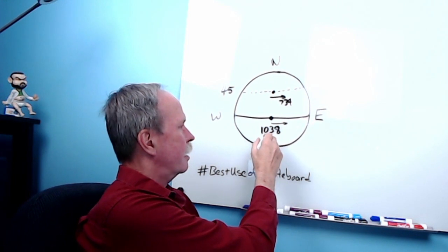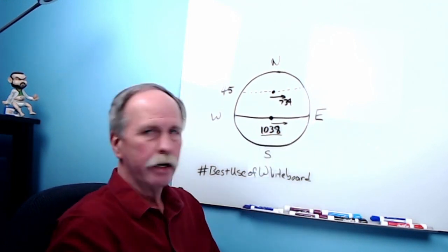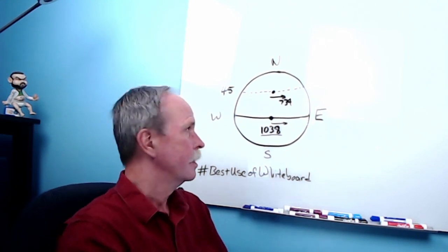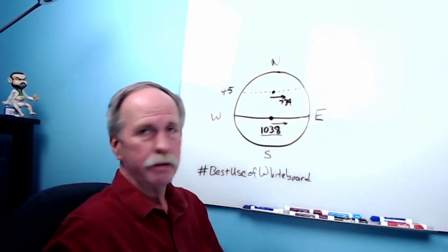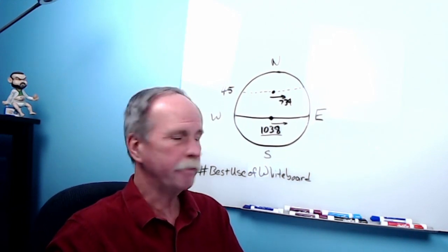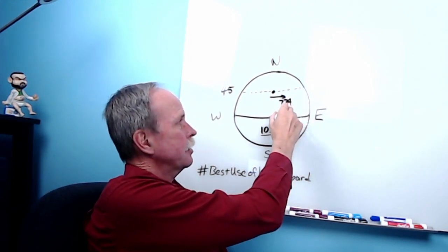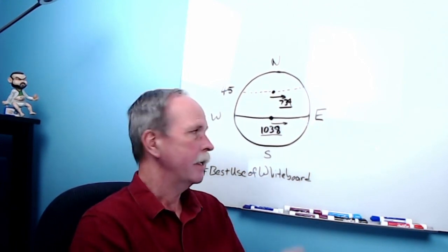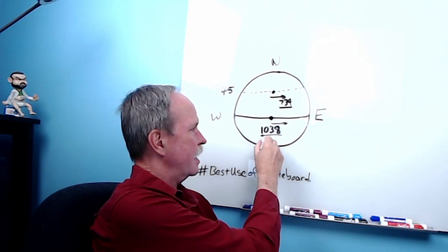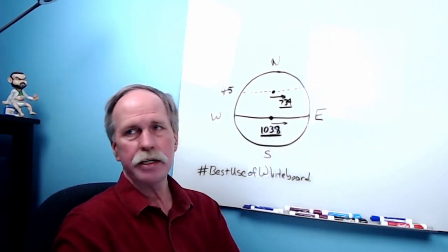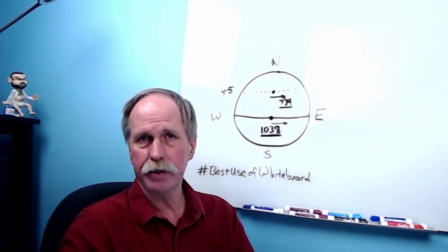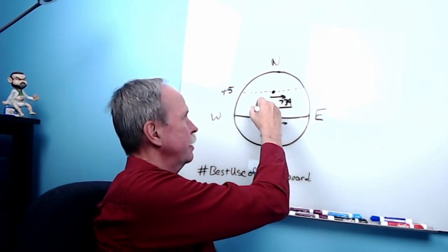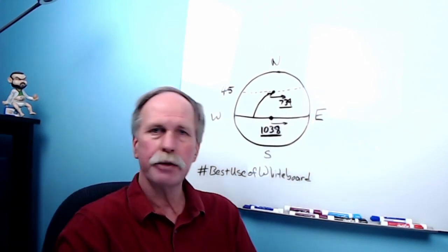Say you're in an aircraft and you're taking off from the equator and heading north to the 45th parallel. When you leave the equator, your aircraft is moving from west to east at 1,038 miles per hour. By the time you get up to the 45th parallel — say Gaylord, Michigan — the rotation of the earth at that point is only 734 miles an hour. However, you're still retaining this west-to-east velocity from when you took off at the equator.